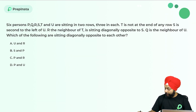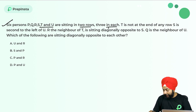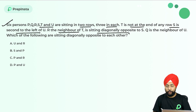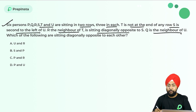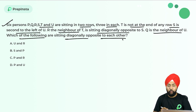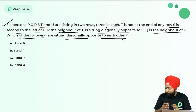Let's start with the very first question. Six friends P, Q, R, S, T, U are sitting in two rows, three in each. T is not at the end of any row. S is second to the left of U. R is the neighbor of T and sitting diagonally opposite to S. Q is the neighbor of U. Which of the following are sitting diagonally opposite to each other? Pause the video, try to solve this, and throw your answers in the comments.